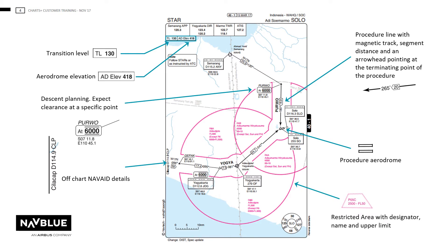The D represents a co-located DME. Similar to SIDs, restricted, prohibited, and danger areas are only to be shown if penetrating a route. Charts are drawn to scale as far as possible. For an area where the scale is distorted, the geographical background will be removed, leaving a white space with the procedure information.